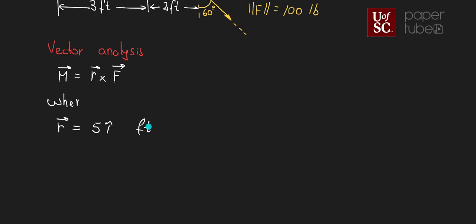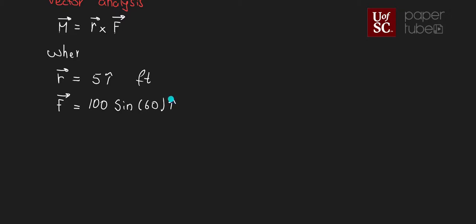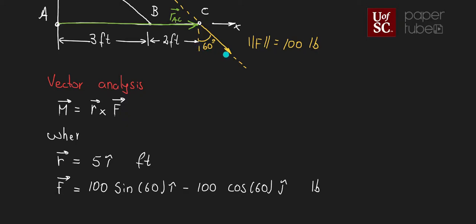Next I need to write the force in Cartesian vector form. Based on the magnitude and the angle, my force vector is equal to 100 sin(60°) i minus 100 cos(60°) j, in pounds. The sine gives the x-component — that's the opposite side — and the cosine gives the y-component, which is along the negative y-axis, so we have the negative 100 cos(60°) j term.